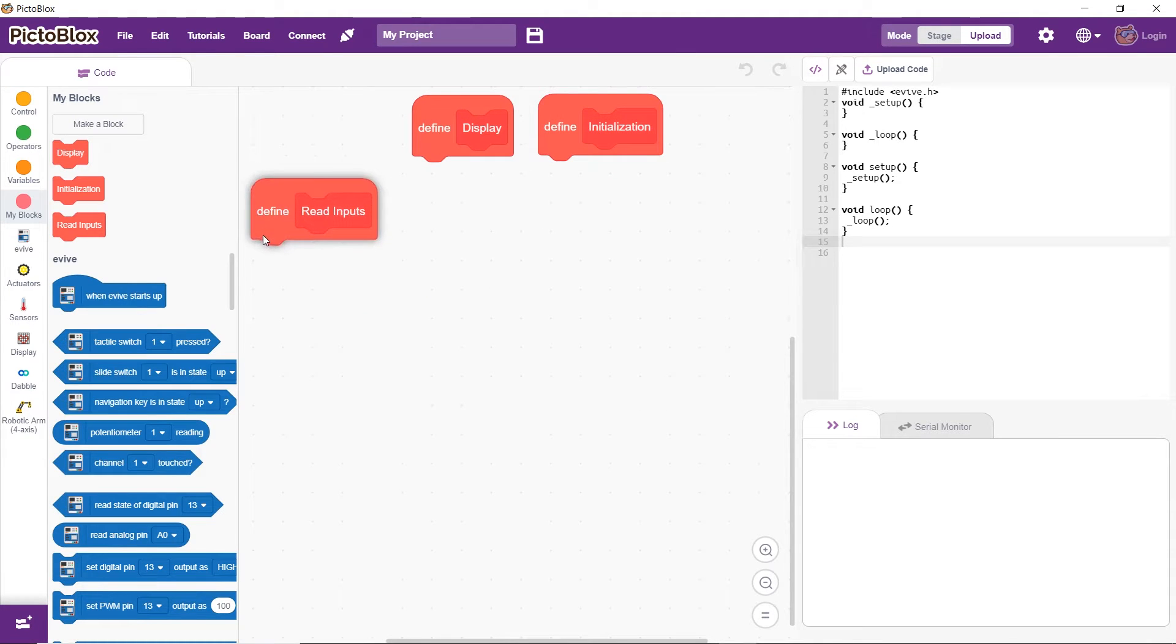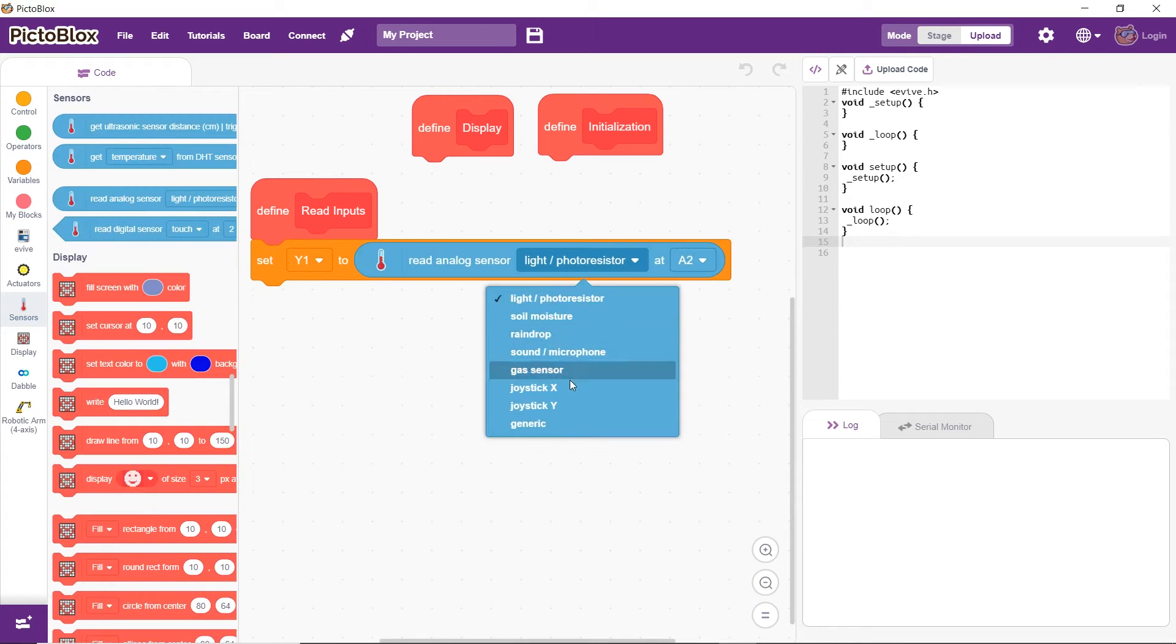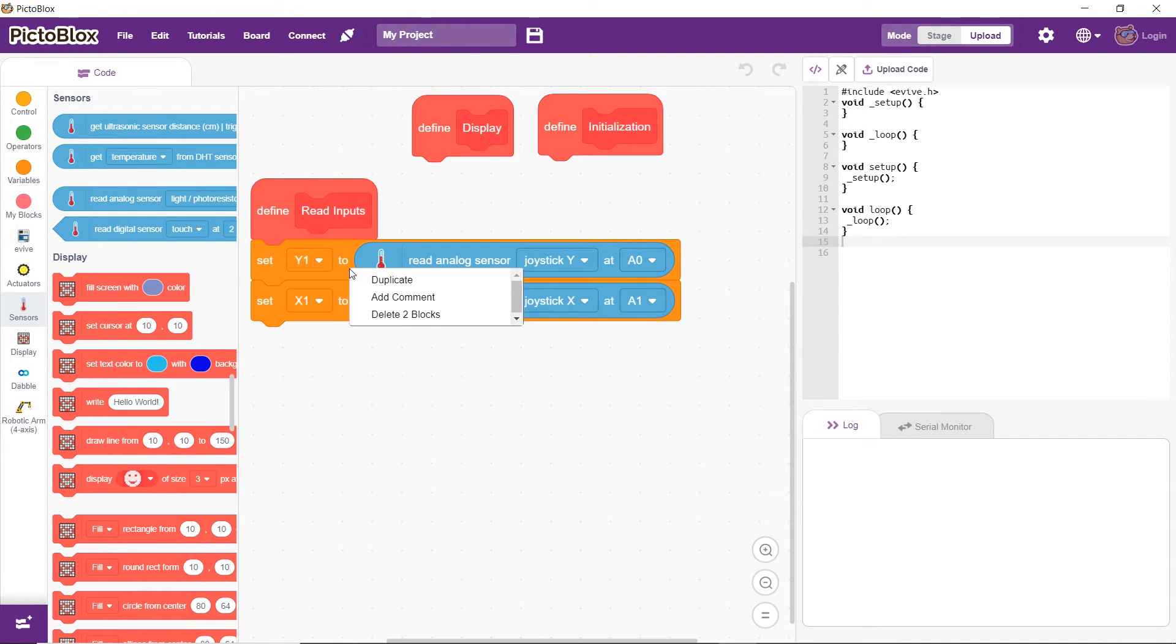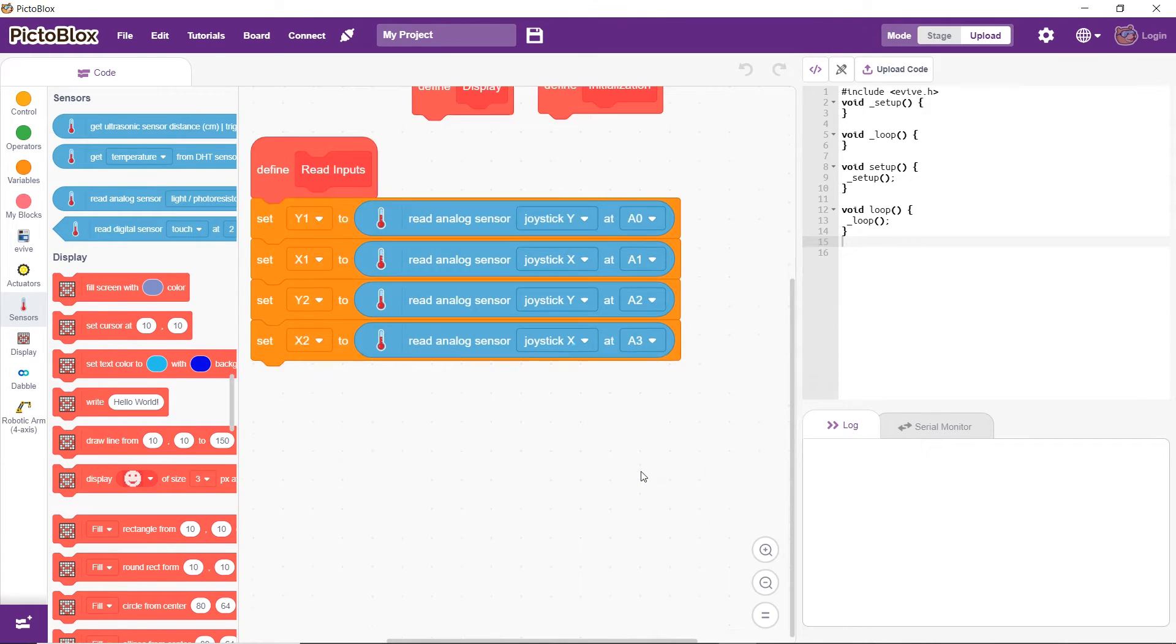In the read input blocks, set the variables to the values obtained from both the joysticks. Set y1 to the value obtained from the A0 pin, set x1 to the value obtained from the A1 pin, set y2 to the value obtained from the A2 pin, set x2 to the value obtained from the A3 pin.